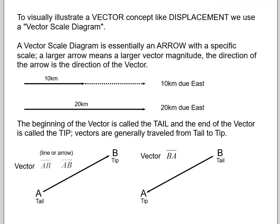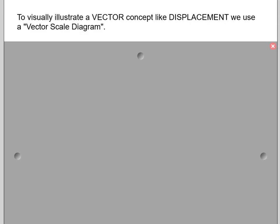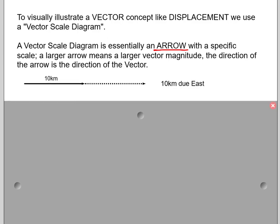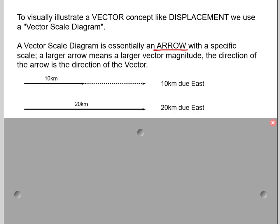So, when we want to illustrate a vector, to illustrate a vector concept like displacement, we use a vector scale diagram. And it sounds really nasty and scary. It's basically an arrow. So a vector scale diagram, it's an arrow. So after that big, scary title, we find it's an arrow with a specific scale. A larger arrow vector, a larger arrow means a larger vector magnitude. The direction of the arrow is also the direction of the vector. So, if you have something like this, this black line here is 10 kilometers, 10 kilometers due east, it's pointing to the east. If I have 20 kilometers, you'll notice it's twice the size of the 10 kilometer vector, and it has the same direction. They're both parallel.